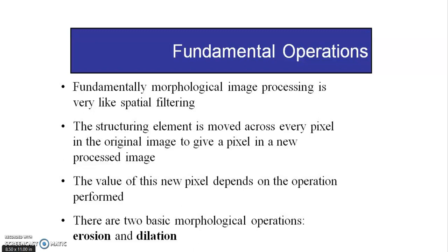Fundamentally, morphological image processing is very much like spatial filtering. The structuring element is moved across every pixel in the original image to give a pixel in the new processed image. The value of the new pixel depends on what operation you're going to perform — whether it's a hit or a fit operation — so the pixel value will change depending on the operation.